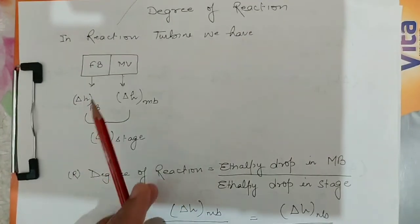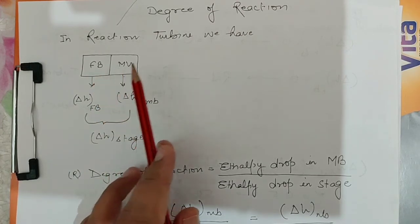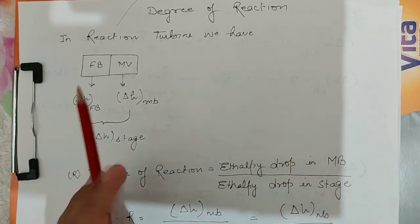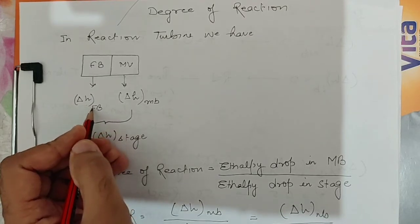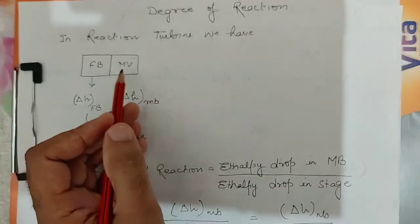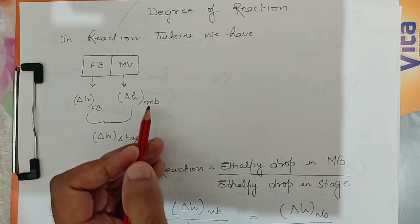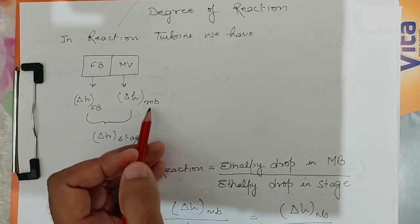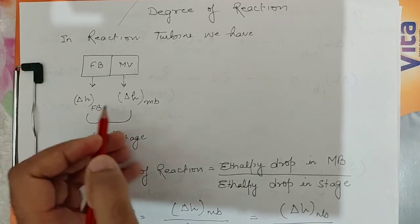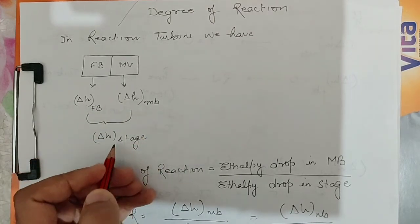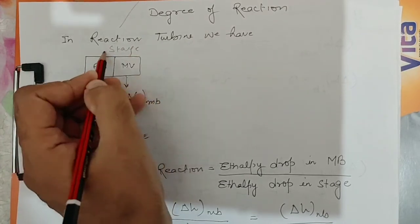In the reaction turbine, we know that there is a fixed blade and one moving blade — fixed blade, moving blade, fixed blade, moving blade — so there are a number of stages. In the fixed blade, the enthalpy drop is delta H_fb, and in the moving blade the enthalpy drop is delta H_mb. The sum of delta H_fb and delta H_mb represents the enthalpy drop of that stage.